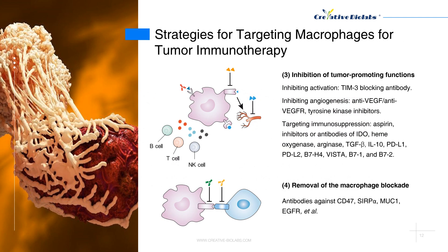3. Inhibition of tumor-promoting functions: TIM3-blocking antibody is reported to regulate the activation of tumor-associated macrophages. By inhibiting angiogenesis, anti-VEGF, anti-VEGFR, and tyrosine kinase inhibitors could weaken the protumoral function of tumor-associated macrophages. Tumor-associated macrophages contribute to an immunosuppressive microenvironment by expressing indoleamine 2,3-dioxygenase, heme oxygenase, arginase, TGF-beta, IL-10, prostaglandins, and so on. Aspirin reduces the generation of prostaglandins. Blocking immune checkpoints such as PD-L1, PD-L2, B7H4, VISTA, B7-1, and B7-2 on macrophages could relieve the function of other immune cells.